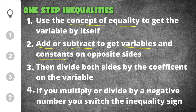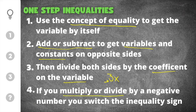After you check for that, you will divide both sides by the coefficient on the variable. For example, if we had the term 3x, the 3 would be the coefficient, so you would divide by 3. Finally, when it comes to inequalities, if you multiply or divide by a negative number you will switch the sign of the inequality.